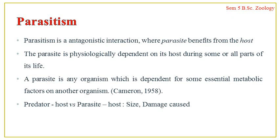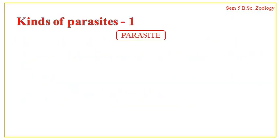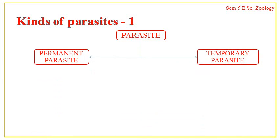Most parasites are protozoans, nematodes, platyhelminthes, arthropods, etc. There are different kinds of parasites and several classifications. Generally there are two types: temporary parasites and permanent parasites. Temporary parasites are also referred to as partial parasites. Temporary parasites are those which spend only a part of their life cycle as parasites — they are not parasites throughout their life, but only during a short span. They live as free-living organisms for the major part of their life.